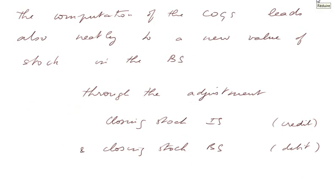The computation of the COGS leads also neatly to a new value of stock in the balance sheet through the adjustment that we studied. These adjustments consist in opening two accounts, one called closing stock IS that will be credited the final inventory value, and closing stock BS that will be debited the same value.